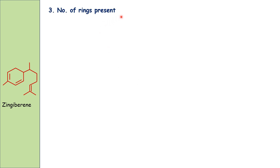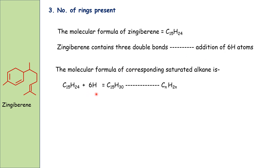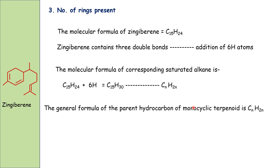Number of rings present: the molecular formula is C15H24. Since it contains three double bonds, we add six hydrogen atoms, giving C15H30, which corresponds to the general formula for a monocyclic compound. Therefore, gingivirine is monocyclic in nature.